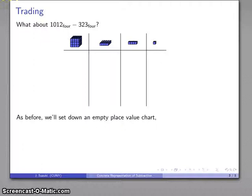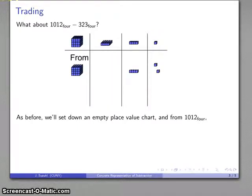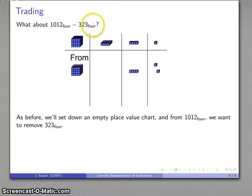And so I'm going to have my 1012 base 4, that's 4 digits, so that's going to be 1 of these, 0 of these, 1 of these, 2 of these. And from that, I want to remove 323 base 4. That's 3 of these, 2 of these, and 3 of these.